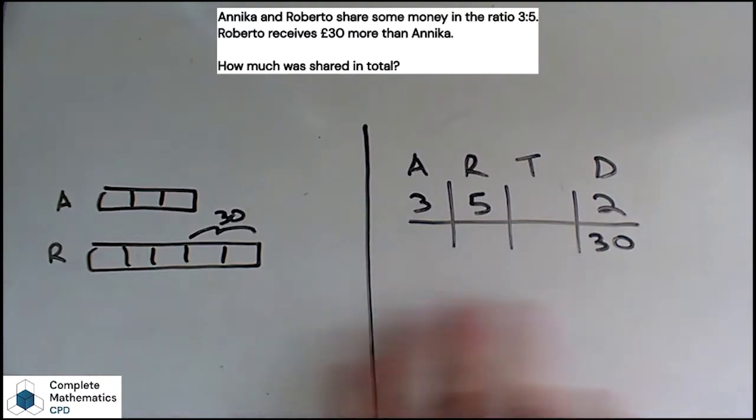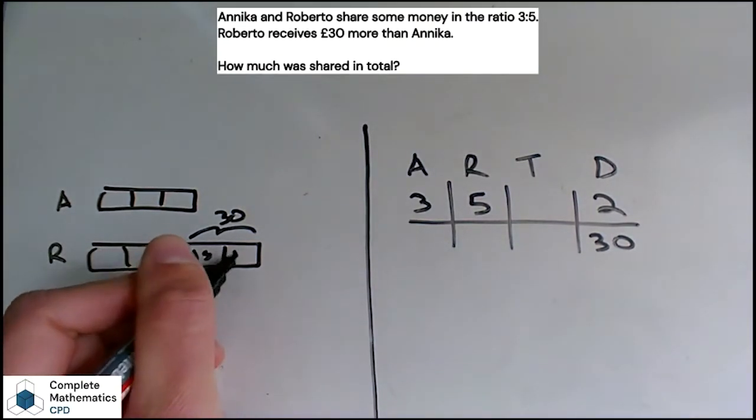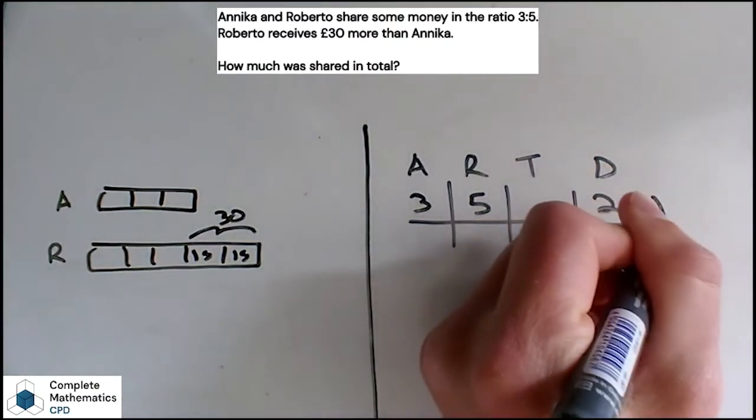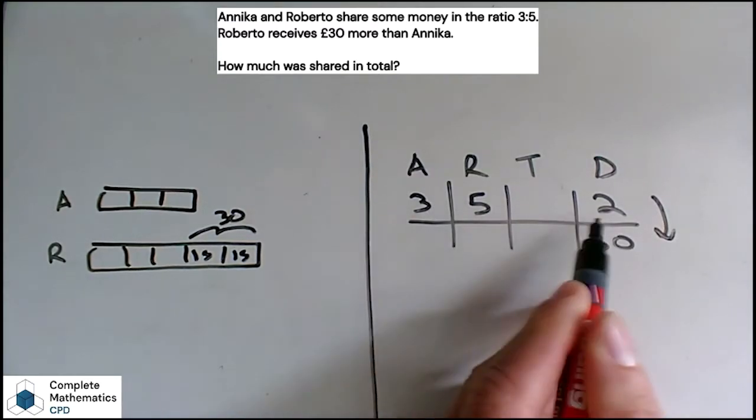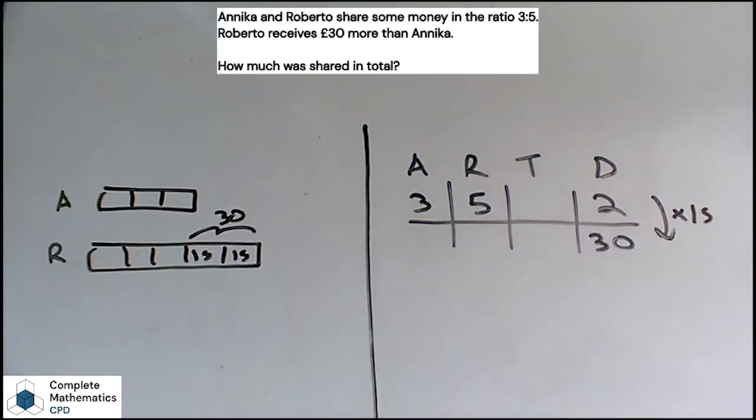And at this stage the rest of the solution kind of falls out for both of the models. Here we've got these two parts being worth £30, so that's £15 each. With our ratio table we're always looking for these multipliers: how do we get from here to here, or from left to right as well. So 2 times 15 is how we get up to this 30.